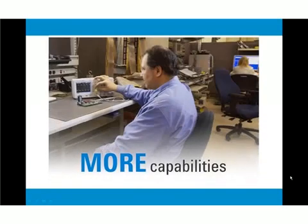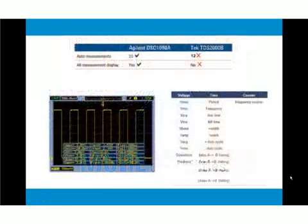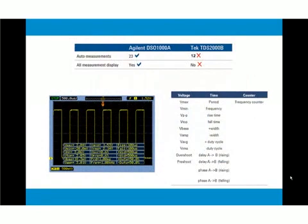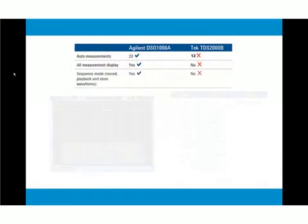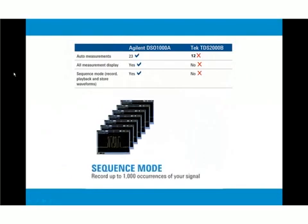Feel like you're using a much higher priced scope? 23 automatic measurements give you quick access to powerful functions. An all-measurement display allows for quick view and sharing of all your measurements.